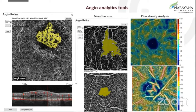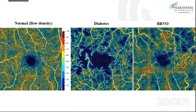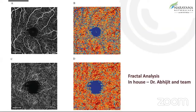The angioanalytics tool also helps us to delineate membranes, and Dr. Santosh will be covering that in more detail. This is how we get a color-coded map, with navy blue indicating where there is absence of flow. You can see it's more diffuse and the FAZ is very much altered in patients with diabetics, compared to BRVOs or vein occlusions where the abnormalities are more localized. We also have an inbuilt software for fractal analysis — the blue again indicates non-flow areas and the red indicates high flow areas or the vasculature.